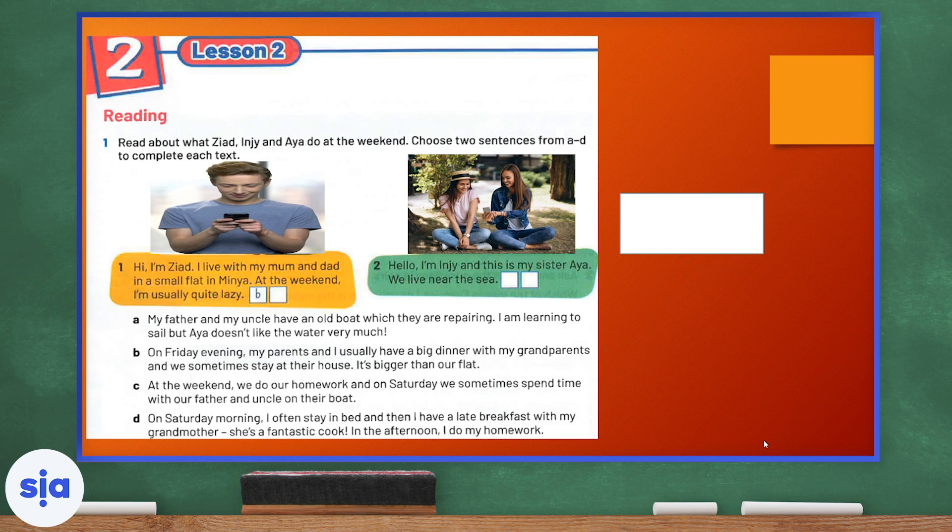At the weekend, we do our homework and on Saturday, we sometimes spend time with our father and uncle on their boat. So if there's a boat and Inji and Aya live near the sea, this might be a possible answer. D. On Saturday morning, I often stay in bed and then I have a late breakfast with my grandmother. She's a fantastic cook. In the afternoon, I do my homework. Now, let's match the letters with the correct people.